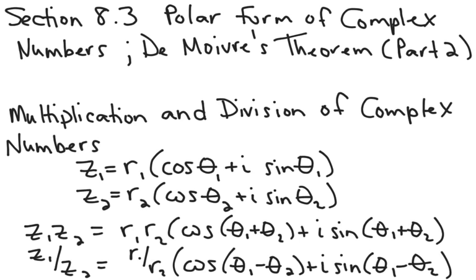To multiply two complex numbers together, you multiply the moduli and you add the angles. To divide two complex numbers, you divide the moduli but you subtract the angles.